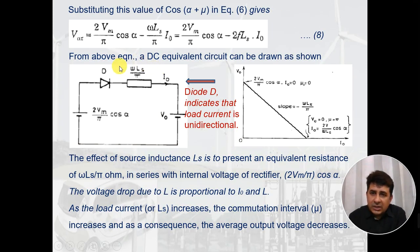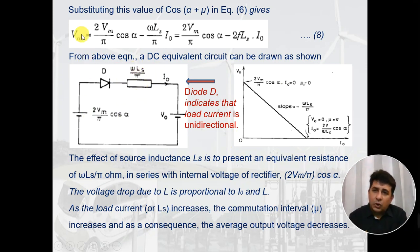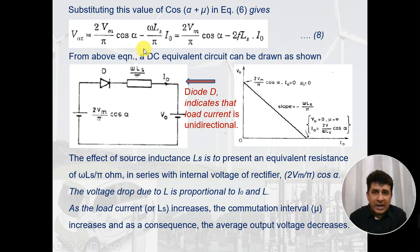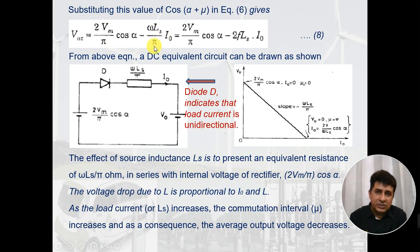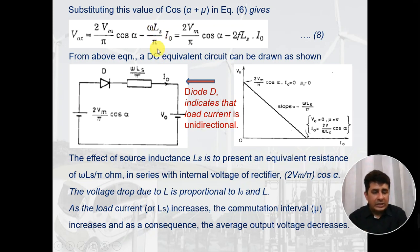The factor by which the voltage is reduced: the output voltage, which is 2Vm/π·cosα in the case of full converters, gets reduced by ωLs/π·I0. This is the factor by which the voltage is reduced due to the presence of source inductance.